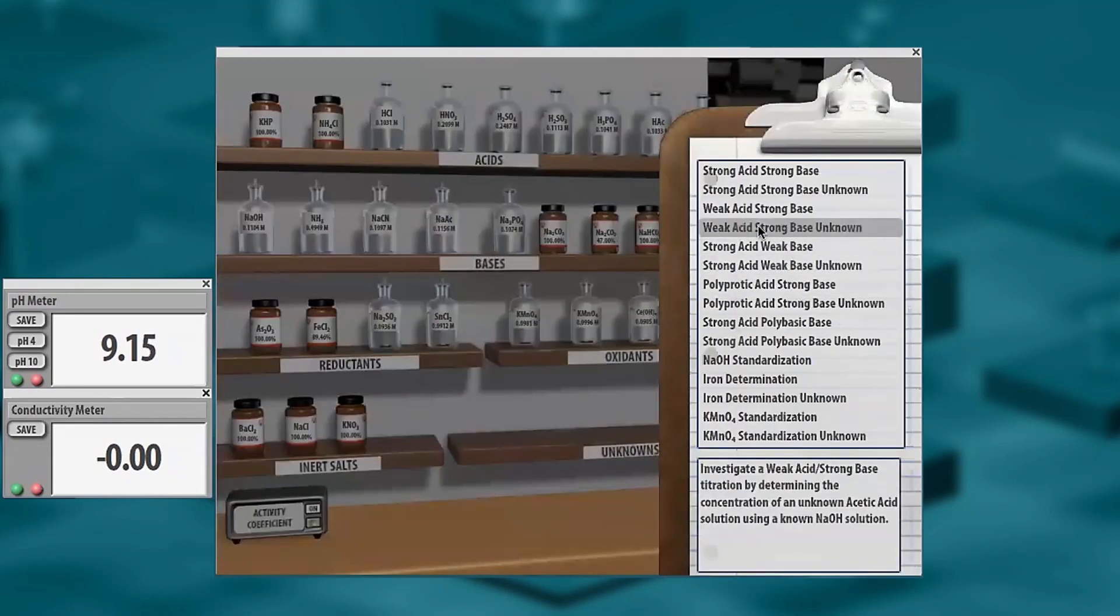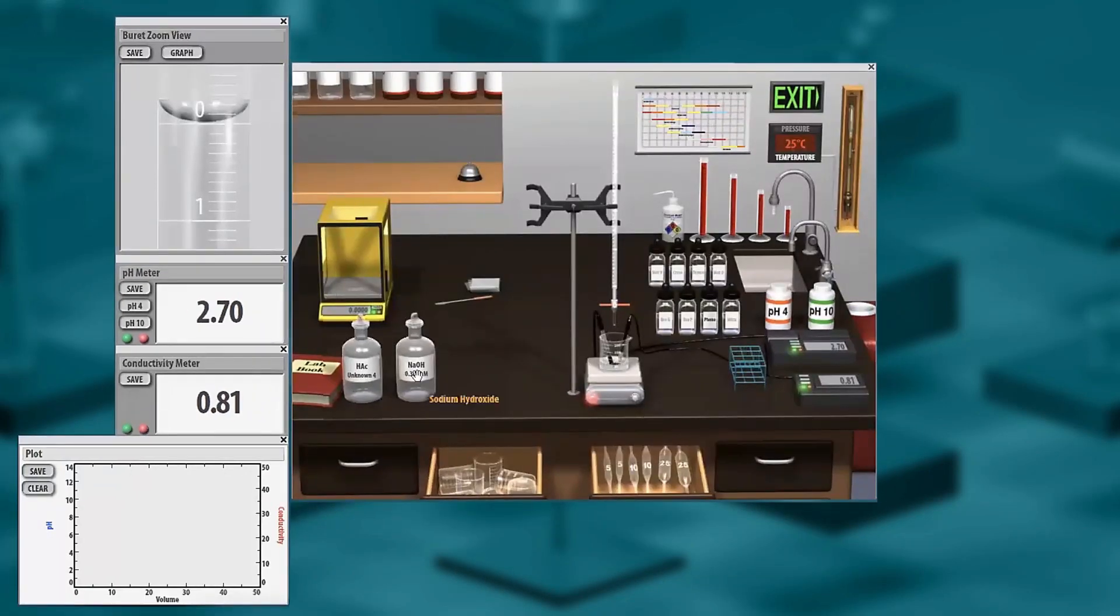You can do presets. So here's a preset: weak acid, strong base titration. Go and do it. Save this data to the lab book.